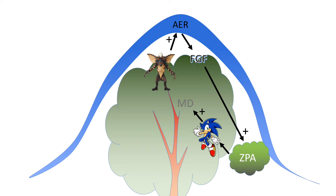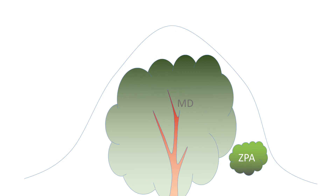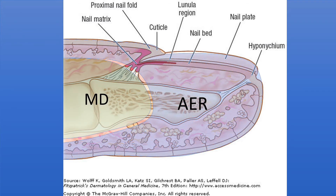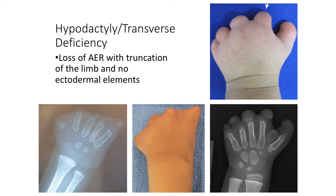What else can go wrong? The primary determinant of growth is the AER. If you lose that, the limb just stops growing — that's your transverse deficiency. Interestingly, the AER makes up the distal half of the distal phalanx. The proximal half is mesoderm, while the distal half, which includes the nail and the tuft, is all AER. Therefore, when you've lost AER, you do not get fingertips, you do not get nails. You get hypodactyly transverse deficiency: loss of the AER with truncation of the limb and no ectodermal elements.